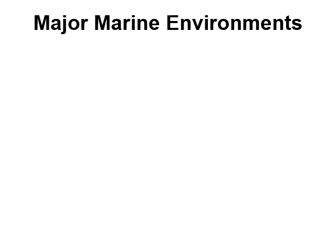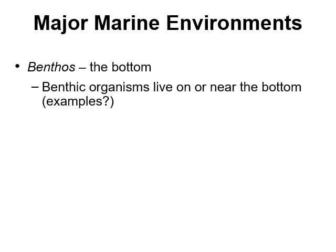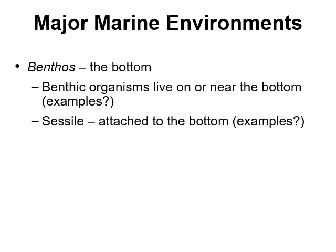Let's talk about some parts of the marine environment. When I say benthos, I'm referring to the bottom. Benthic organisms are things that live on or near the bottom — for instance, coral reef fish are benthic because they hang out near the bottom near the corals. Clams are benthic, sea stars are benthic. Things that are sessile are not only benthic but also attached to the seafloor — like a mussel or kelp, which are actually attached to the seafloor and don't go anywhere.